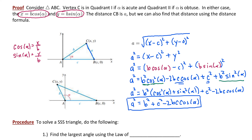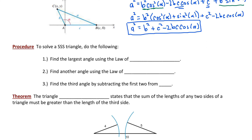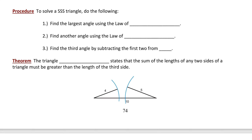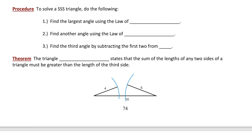We could repeat this proof for sides B and C, but this is sufficient to establish the formula. The law of cosines is very useful in the side-angle-side case and also the side-side-side case. To solve an SSS triangle: first, find the largest angle using the law of cosines; then find any other angle using the law of sines, which is more convenient; and finally, find the third angle by subtracting the first two from 180 degrees.